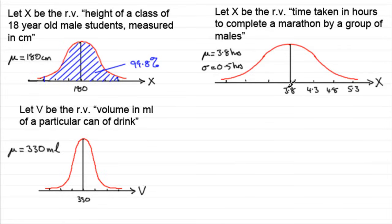And if we go back in the other direction, take off 0.5 for each standard deviation, this would be 3.3. This would be 2.8, and this would be 2.3. So in other words, 99.8% of times, we could expect to be between 2.3 hours and 5.3 hours.